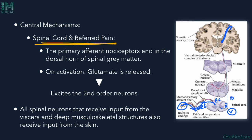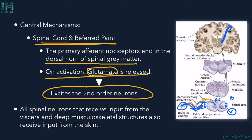Primary afferent nociceptors end in the dorsal horn of the spinal gray matter. On activation, glutamate — an excitatory neurotransmitter — is released and excites the second-order neurons. In the sensory system, the dorsal root ganglion is the first-order neuron, as signals travel from the receptor site toward the brain — opposite in direction to the motor nervous system.